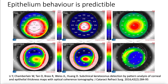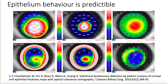The epithelium behavior is predictable. This is well-known and used in contact lens fitting and orthokeratology. We also know that at the peaks of the cones there is a thinning of the epithelium and a thickening of the epithelium around the peaks. So in every keratoconus, we will find this image of thinning in the center and thickening around it — what we call the donut image.